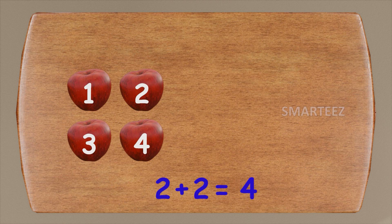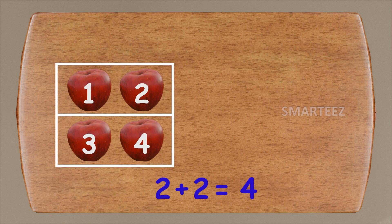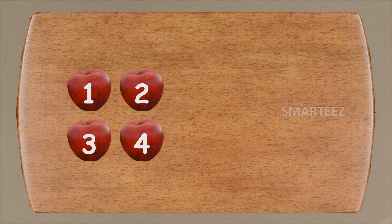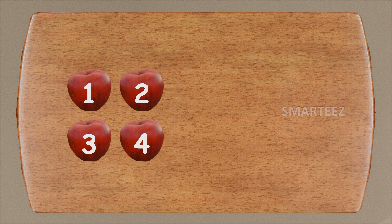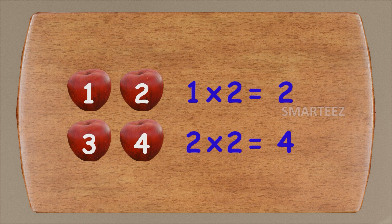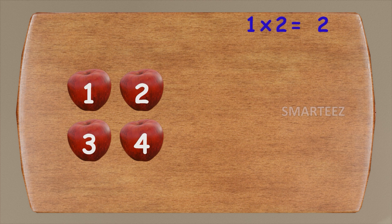We can say we had two times two apples. Take a look here on the table. First, we had two apples — that's one set of two apples. Then we had two more apples — that's the second set of two apples. So we can call this two sets of two apples, or two times two apples. Looking at this way, we can say one times two apples is two, and two times two apples is four. In fact, it doesn't matter if it's apples or any other thing. One times two is two and two times two is four. This is what we call multiplication.